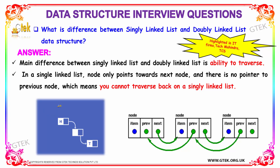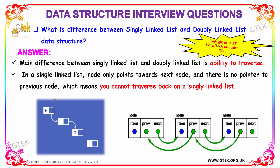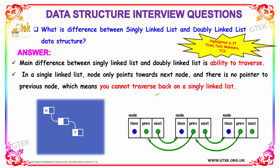Our next question is: what is the difference between a singly linked list and a doubly linked list? The main difference is the ability to traverse. In a singly linked list, the node points only to the next node with no pointer to the previous node, meaning you can't traverse backwards. A doubly linked list is therefore more advantageous as it can traverse in reverse as well. These kinds of questions are highlighted in IT firms such as Tech Mahindra and TCS.